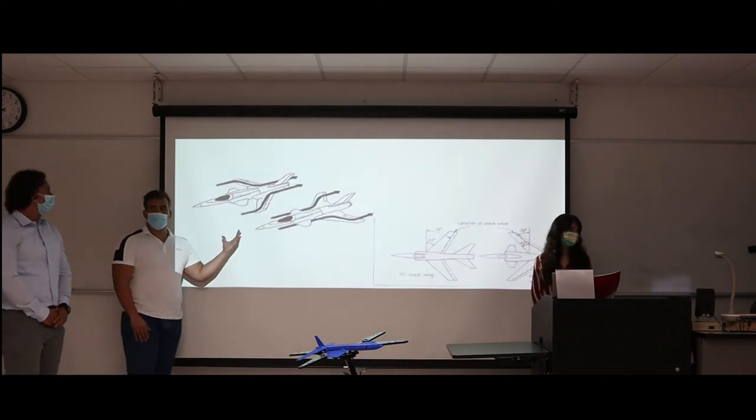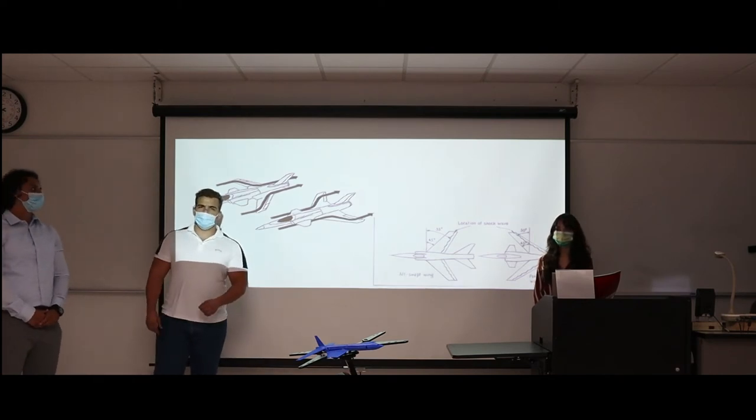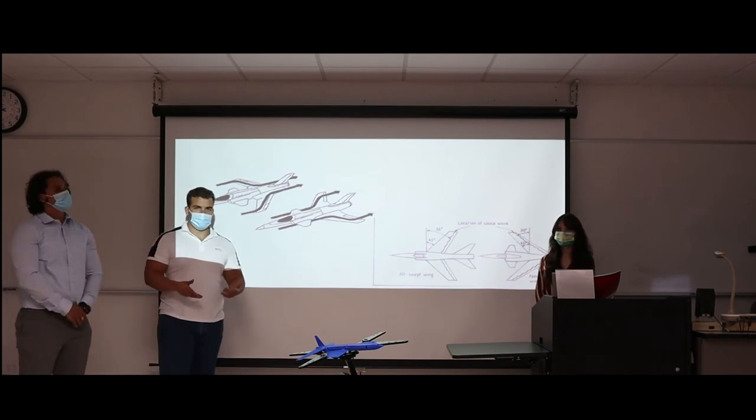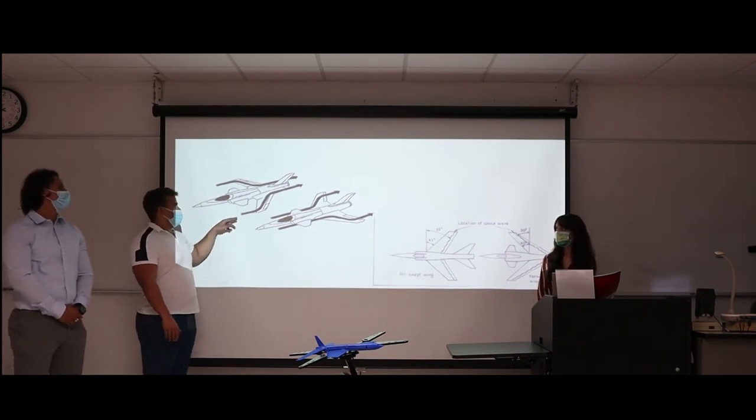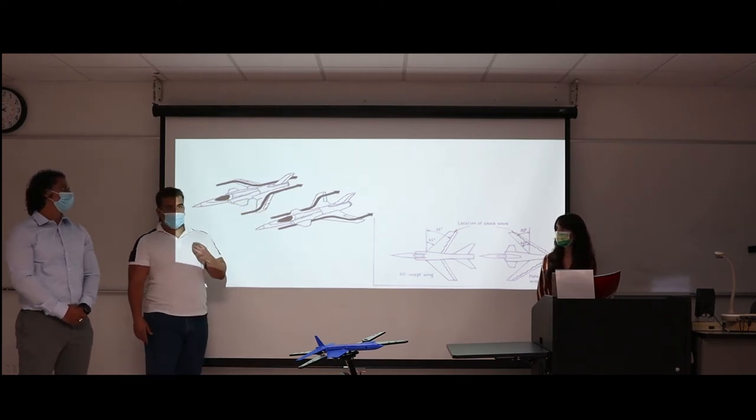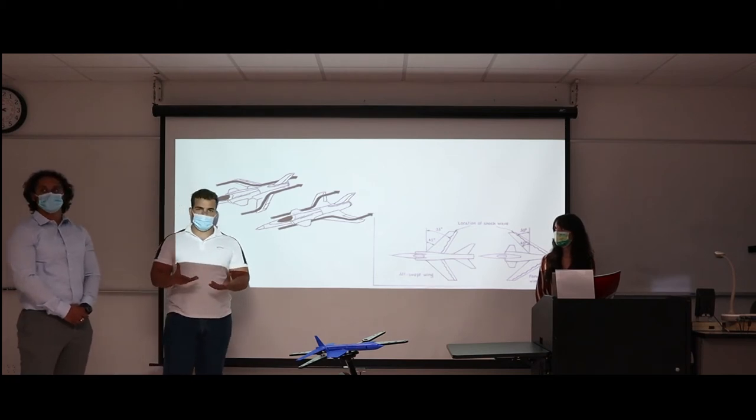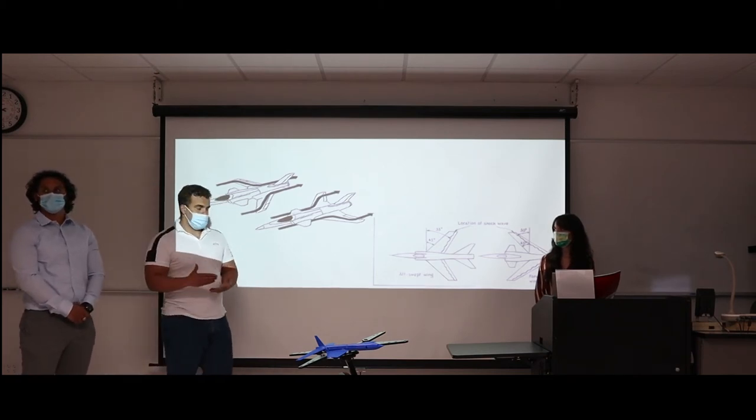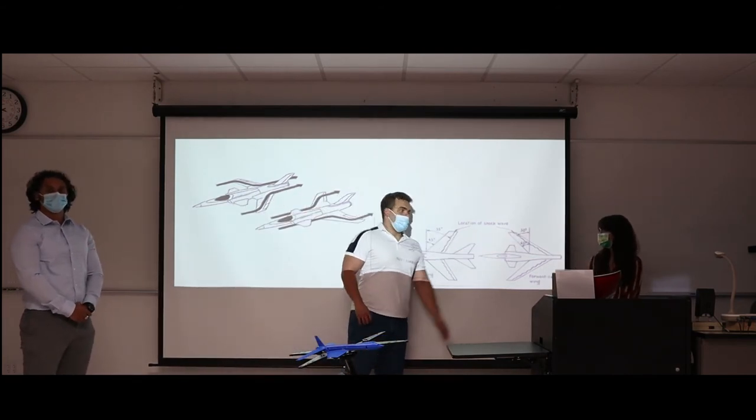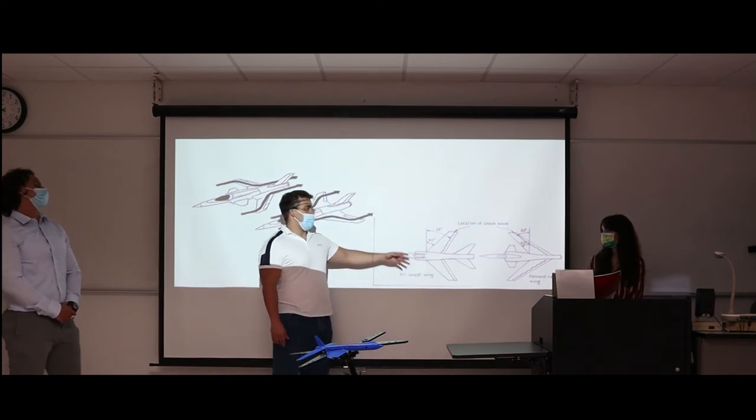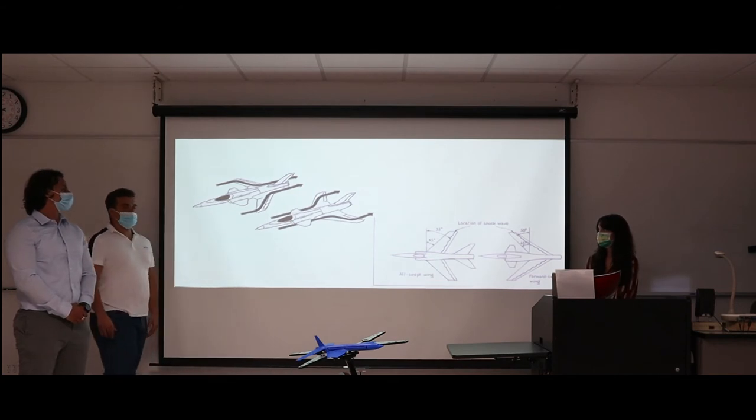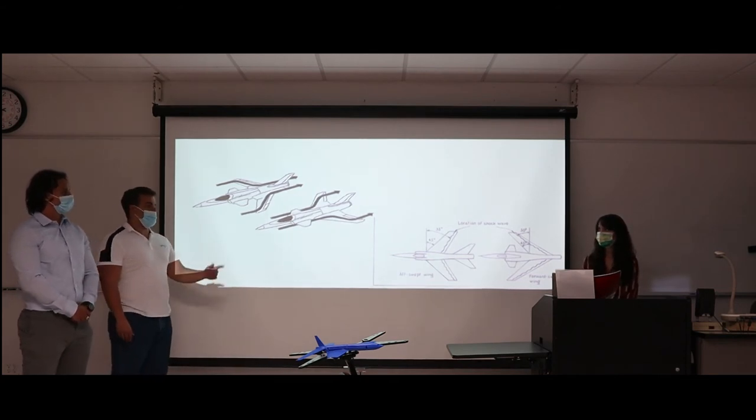Here's one of the forward swept wing advantages: the stall speed and the wave drag. The stall speed is an advantage because it's lowered, it's reduced, and the wind and air flow is from the tip to the roots. When you have this type of flow, during stall speed, you have better aileron controls. And for the wave drag advantage is that the shock waves are more offset towards the trailing edge rather than the conventional design, where the location of the shock wave is more in the middle of the wing. That's better for fuel consumption, one of the advantages as well.